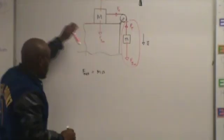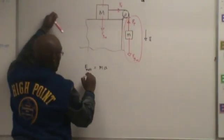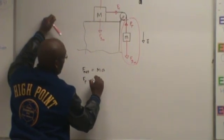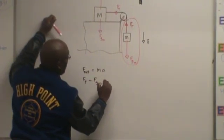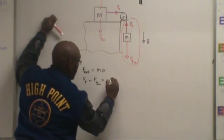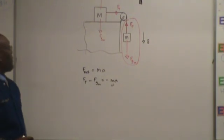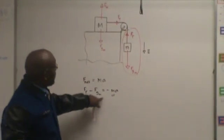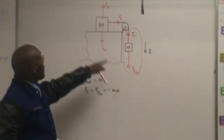And for this part, F net is Ft minus Fgm equals negative ma. We're assuming that ma is positive, so that's negative when the acceleration is negative.